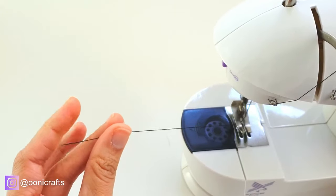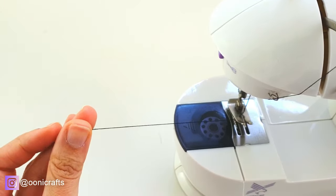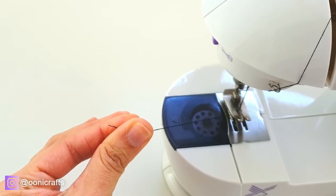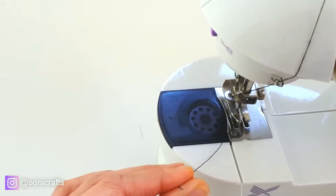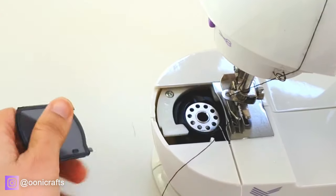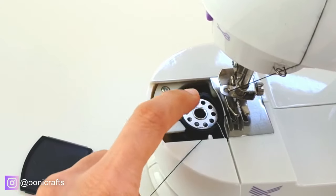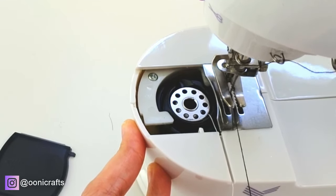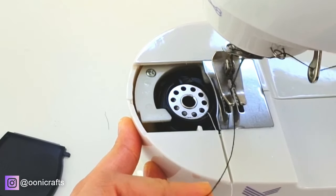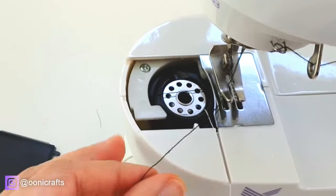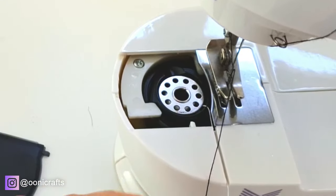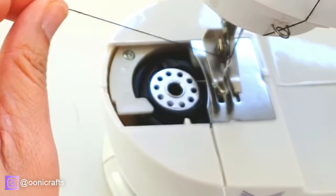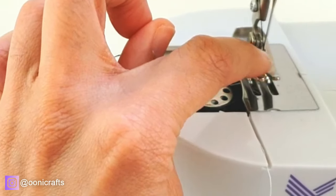And then to bring the thread up, what you do is you turn the hand wheel towards yourself while holding the top thread and the needle is supposed to go down. And as it goes down, in fact, let me open this, let me show you. As the needle goes down, the black thread is going to go around the bobbin. You'll see it coming now. Come on black thread, there it is. Do you see it coming around? And now it's going to catch the white thread. There, it's caught the white thread. And now when I pull this off, you will see that the white thread has come up.